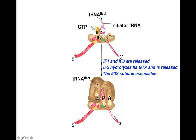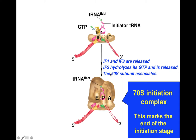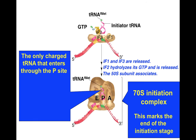The initiator tRNA is a special tRNA that contains fMet — formyl-methionine — a methionine amino acid modified by the attachment of a formyl group. So we have the tRNA-fMet, GTP, IF2, IF3, IF1, and the small ribosomal subunit bound with the messenger RNA. When this happens, IF1 and IF3 are released, IF2 hydrolyzes GTP, and the large subunit binds — and you finally have an assembled ribosome. This is the 70S initiation complex — this is prokaryotic translation. This modified methionine in the initiator tRNA occurs only in prokaryotes, not in eukaryotes. This is also the only charged tRNA that enters through the P site; during elongation, all the rest of the tRNAs with amino acids enter at the A site.